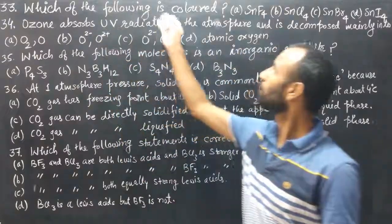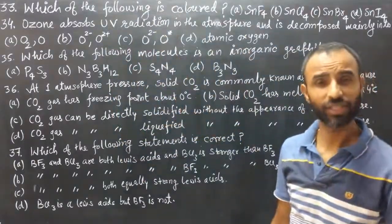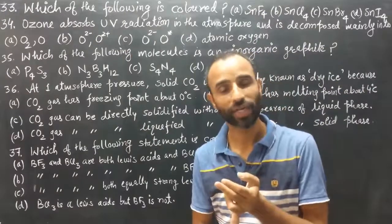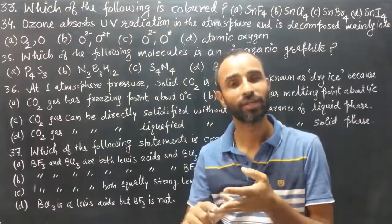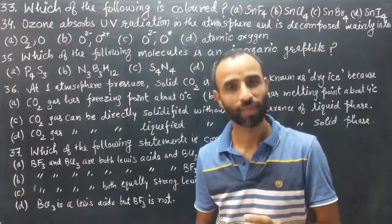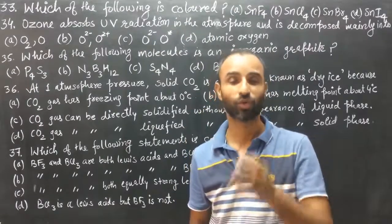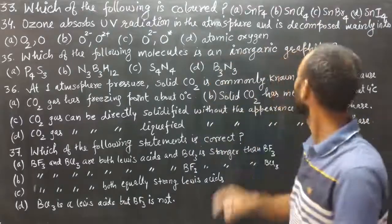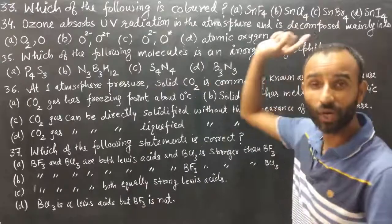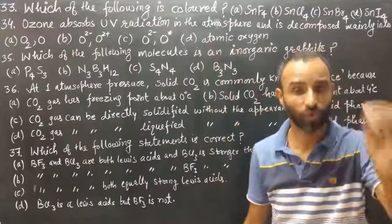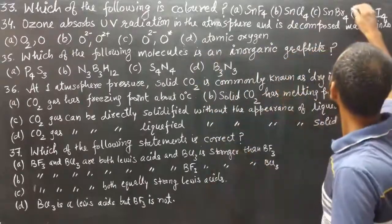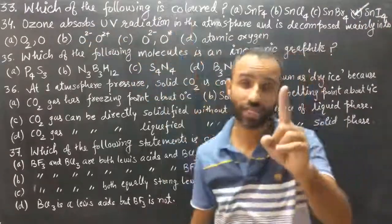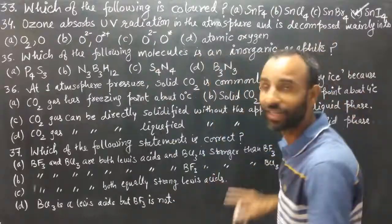Question 33: which of the following silver halides is colored? Silver chloride is white, silver bromide is faint yellow, and silver iodide is bright yellow. So the silver iodide (AgI) is the colored one. Option: iodide is correct.